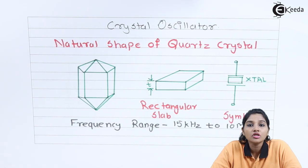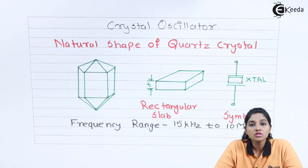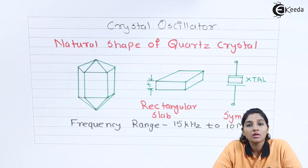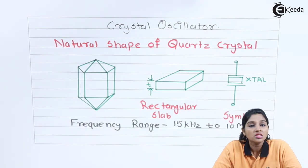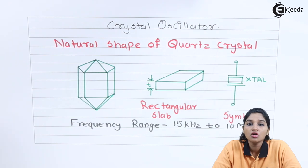Similarly, if we apply mechanical vibrations to the crystal, it produces AC voltage at the output, and the output voltage frequency is equal to the applied vibration frequency. In this way, the crystal oscillator can produce vibrations as well as AC voltage at the output. This effect is called the piezoelectric effect, and the quartz material is basically used to exhibit this effect.